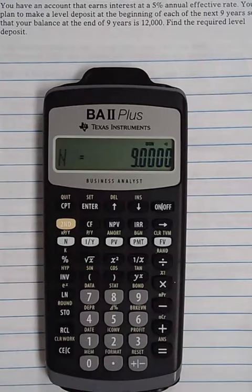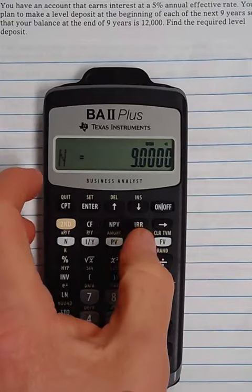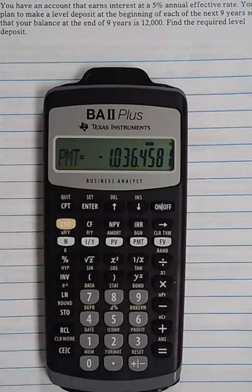We don't have anything for present value because there's nothing in the account to start with. We're not looking for the present value of these deposits. We're looking for the future value of these deposits. And we already cleared out the time value of money, so zero should be in the present value. So we want to compute the payment. Compute payments. And we see that we need to make an annual deposit of 1,036.46.